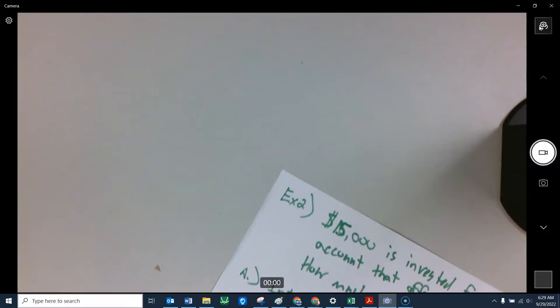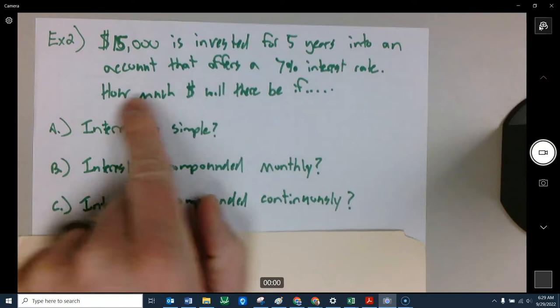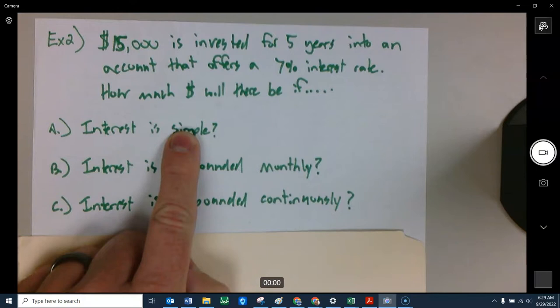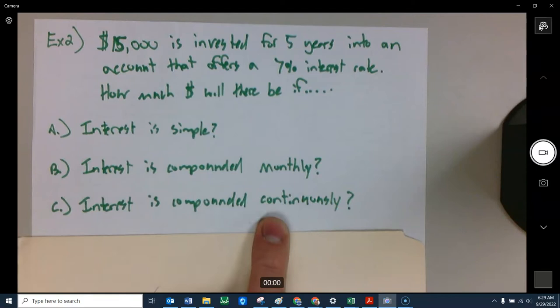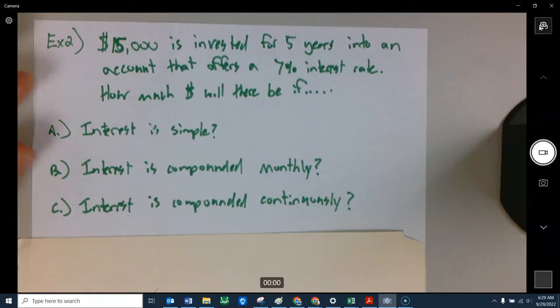All right. Last problem. Let's put it all together. Let's use this little applications piece. So you put $15,000 in some account for five years. That gives you 7% interest. How much will be in the account, A, we're just jamming stuff on our calculator here, if the interest is simple? Use that formula. Simple interest. What about if it's compounded monthly? Compound interest. What about if it's compounded continuously? Right? PERT. Use these three formulas. Rip them through your calculator. Make sure you can handle that and get the same numbers I get. Hit pause. Go.